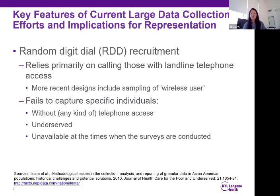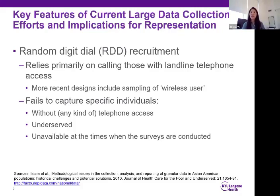This brings us to NHANES and other large national health survey data sets. NHANES previously referred to the declining response rates over time, which is a larger concern for these types of studies. But I'd also like to spend a few minutes unpacking some of the key features of most national data collection efforts and the implications for the population captured, and therefore diversity and representativeness. First is the use of random digit dialing or RDD. Random digit dial recruitment relies primarily on calling those with landline telephone access, although there have been more recent designs to include sampling of wireless users. But RDD really fails to capture specific individuals — those without telephone access, those who are medically underserved, or those who are unavailable at the times when surveys are conducted, such as working class individuals with non-standard work hours.